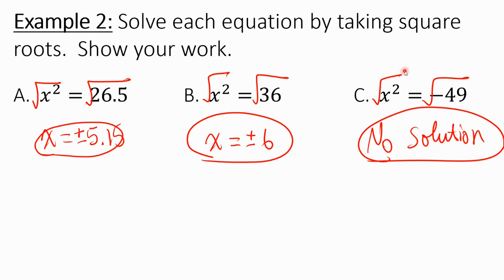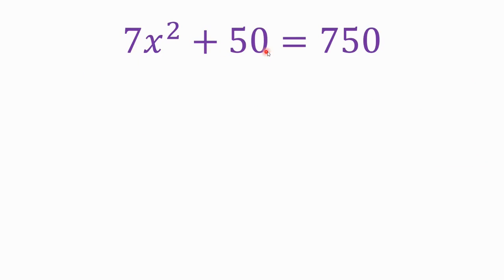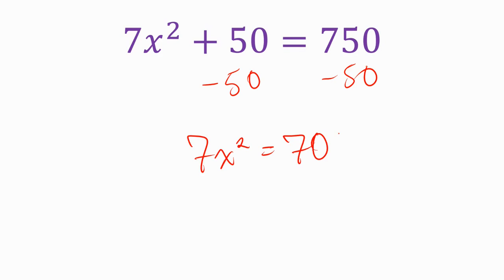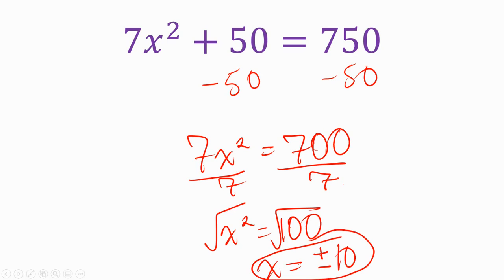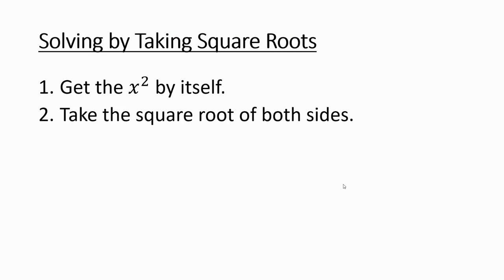But what if x squared is not already by itself? Like 7x squared plus 50 equals 750. We need to get x squared by itself. I have a 7 and a 50 to get rid of. I'll start by subtracting 50 from both sides, giving 7x squared equals 700. Then I divide both sides by 7, giving x squared equals 100. Finally, I take the square root of both sides: x equals positive or negative 10.